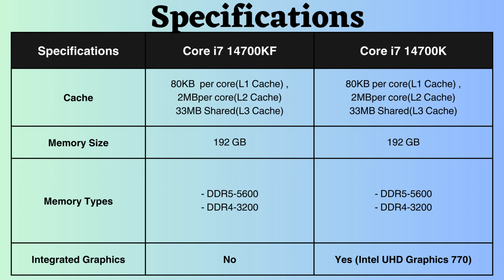Both processors support up to 192 GB of RAM and feature the latest DDR modules, including DDR5 and DDR4, with frequencies of 5,600 MHz for DDR5 RAM and 3,200 MHz for DDR4.